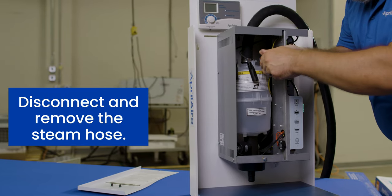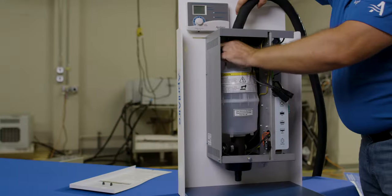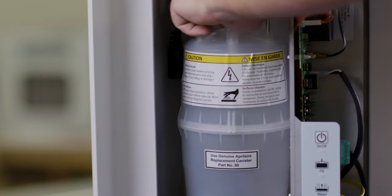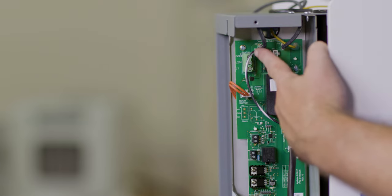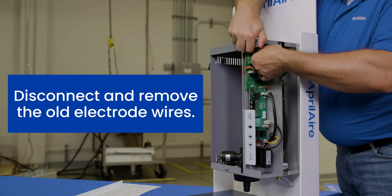Loosen the hose clamp at the top of the canister and slide the steam hose off. With everything disconnected, you can now remove and discard the old canister. Disconnect the electrode wires from the printed circuit board and then discard them.